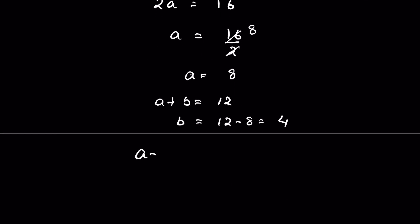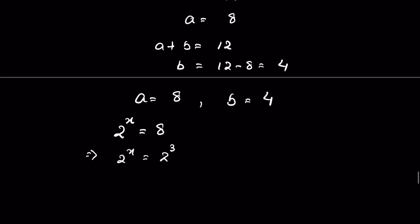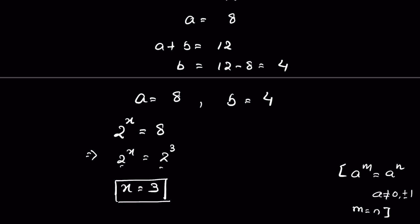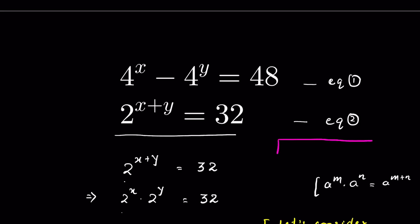Since a equals 2^x equals 8 equals 2^3, and the bases are equal, x equals 3. Since b equals 2^y equals 4 equals 2^2, y equals 2. Therefore, the solution is x equals 3 and y equals 2.